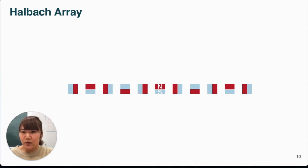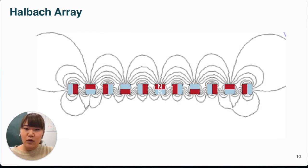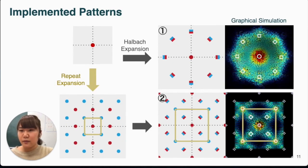Here we thought of using a Halbach array. The Halbach array consists of magnets arranged in the orientation shown in the figure, so that only the magnetic field on one side is stronger than the other. This time, we used the Halbach array in two ways, circular and rectangular, to create and implement the pattern.